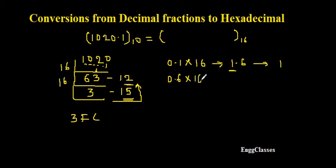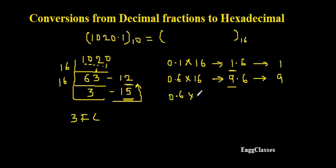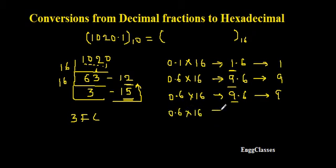I multiply 0.6 by 16, which gives 9.6. I take the integer part 9. The remaining fractional part is 0.6 again, multiplied by 16 gives 9.6 again. This keeps repeating — the integer part is always 9 and the fractional part remains 0.6. It seems endless, so I stop the process here.